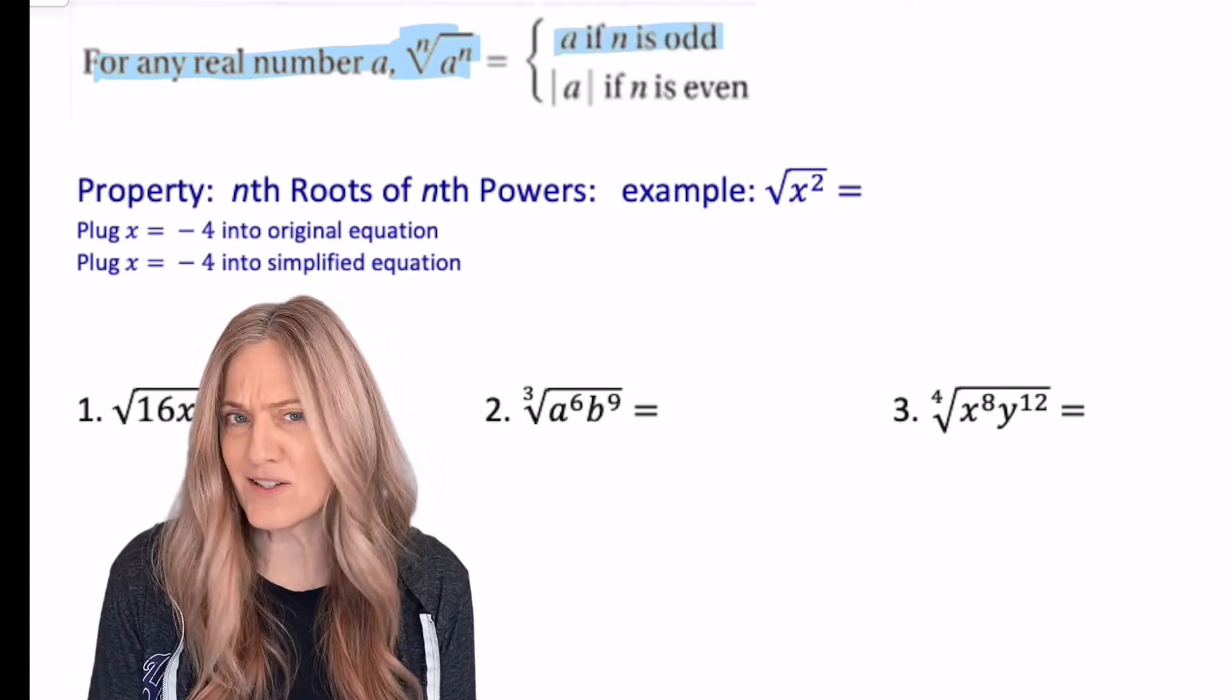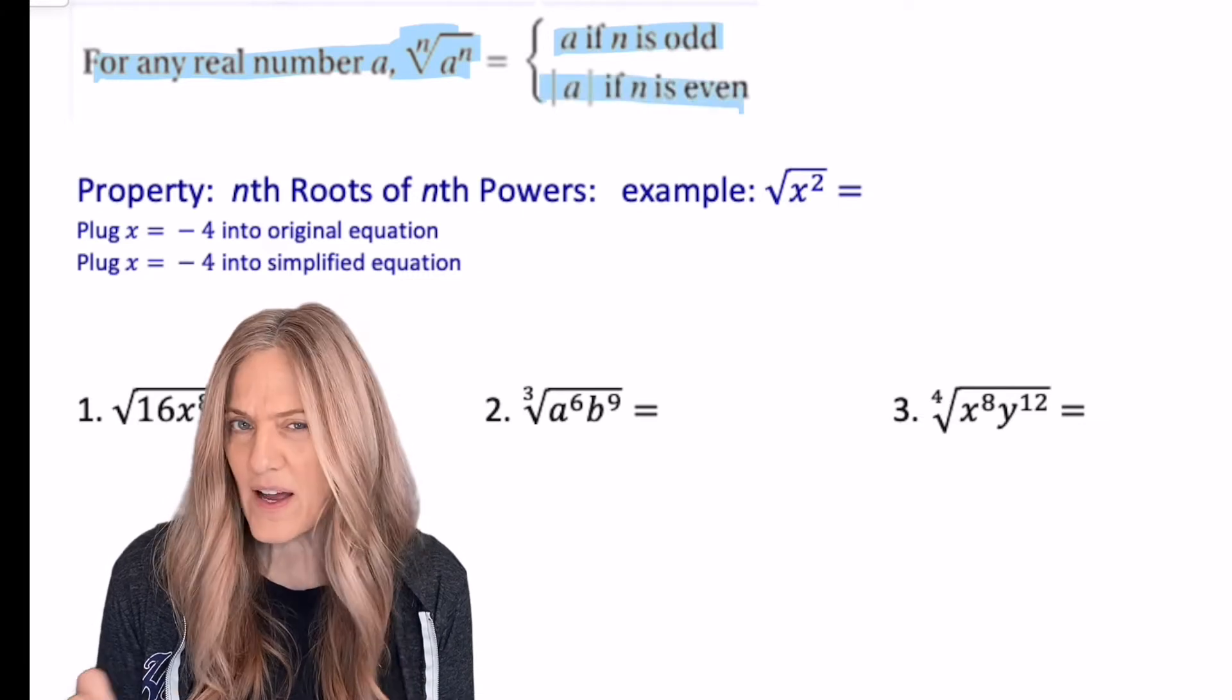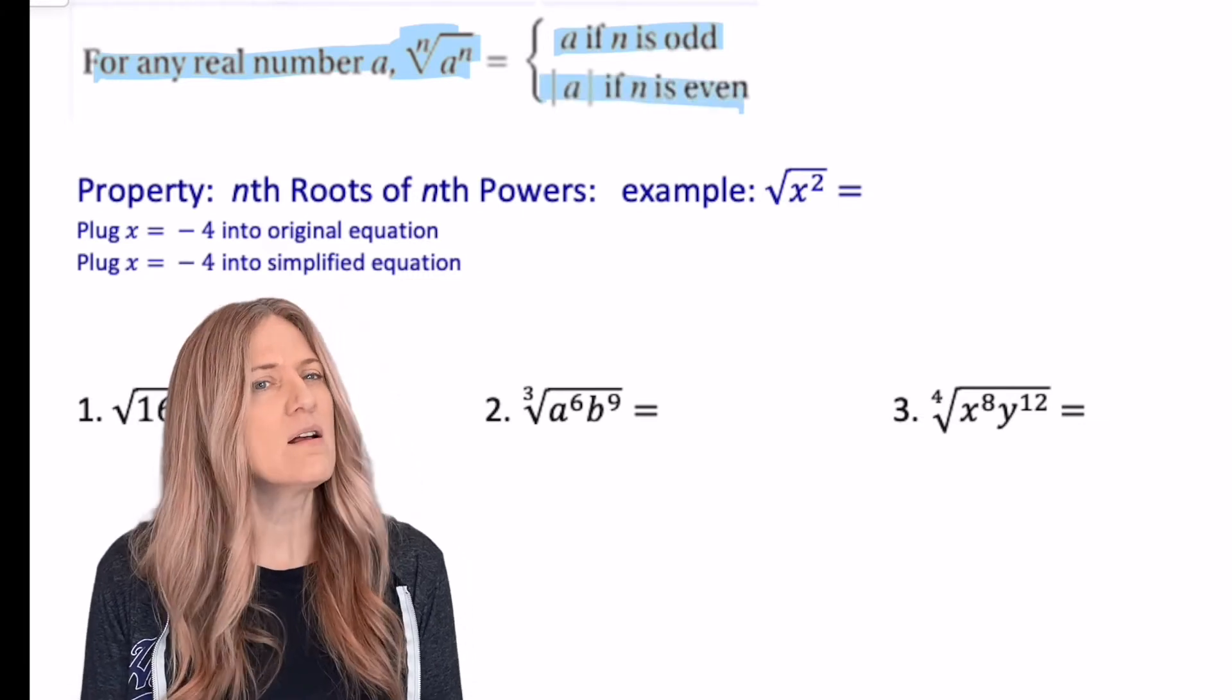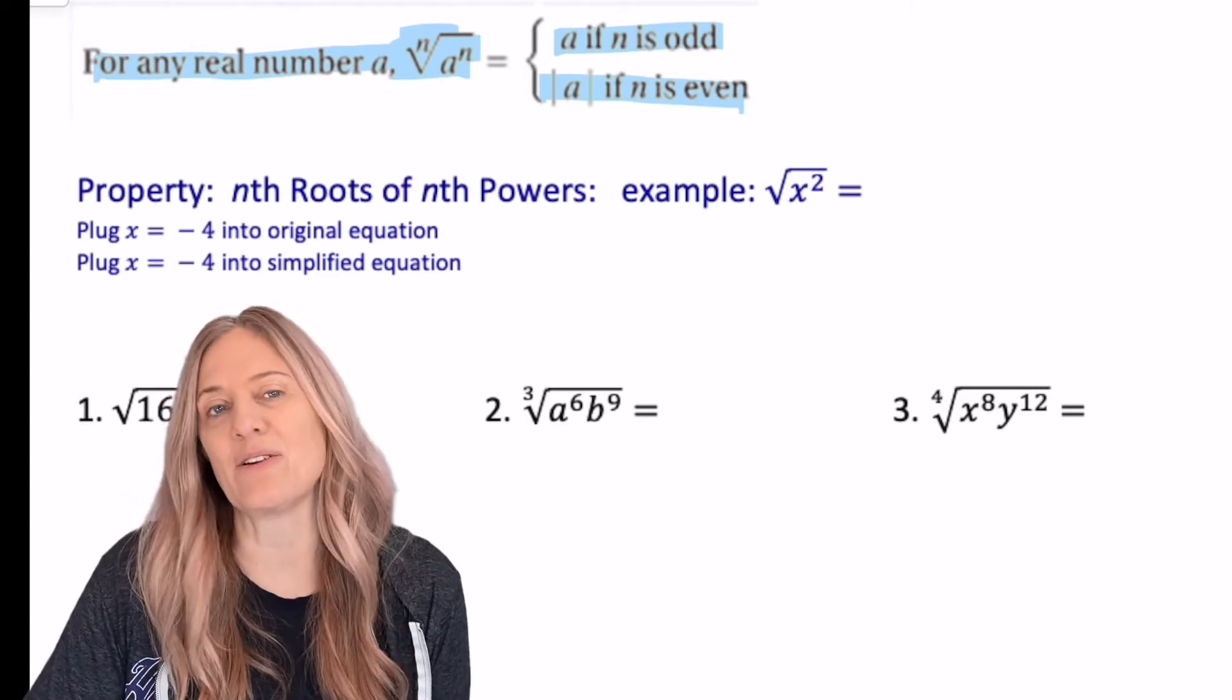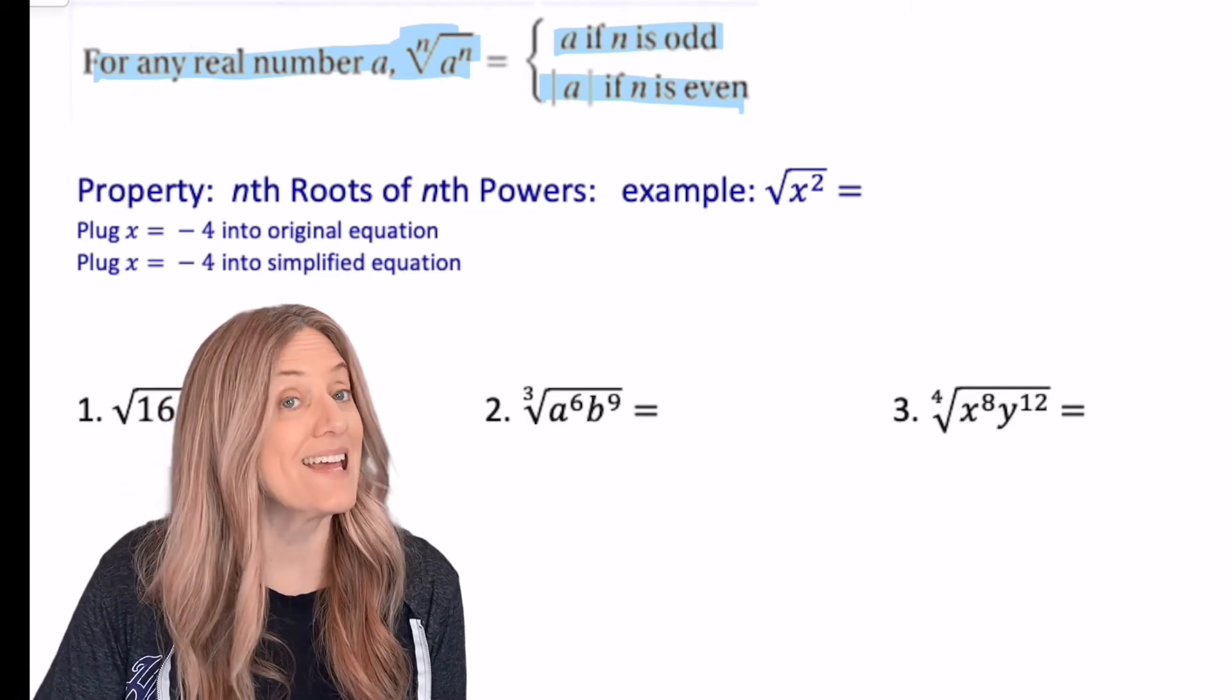a if n is odd and absolute value of a if n is even? Let's think about that. Why do we have to include that absolute value when n is even, when the index is even? Square root, fourth root, sixth root.